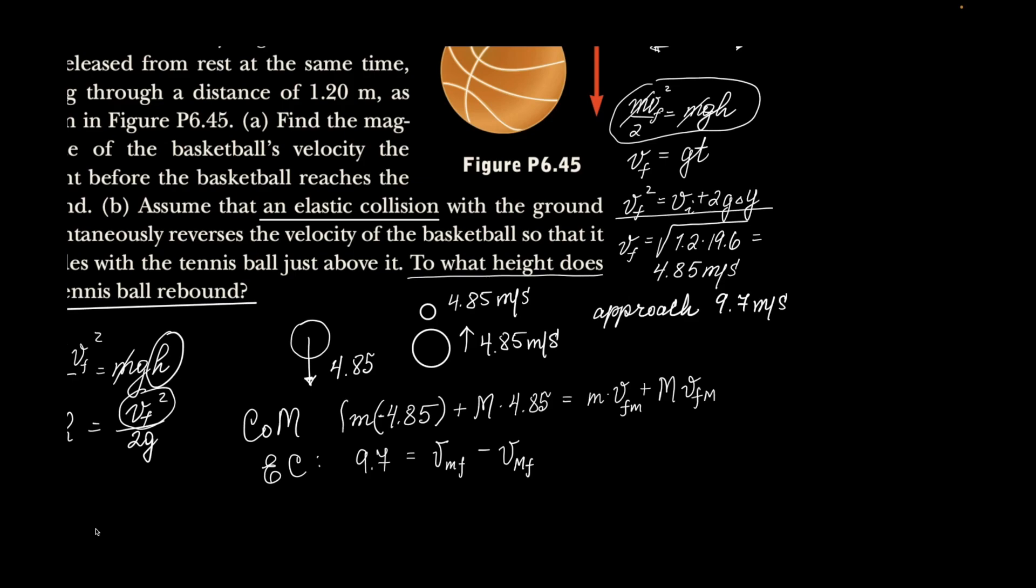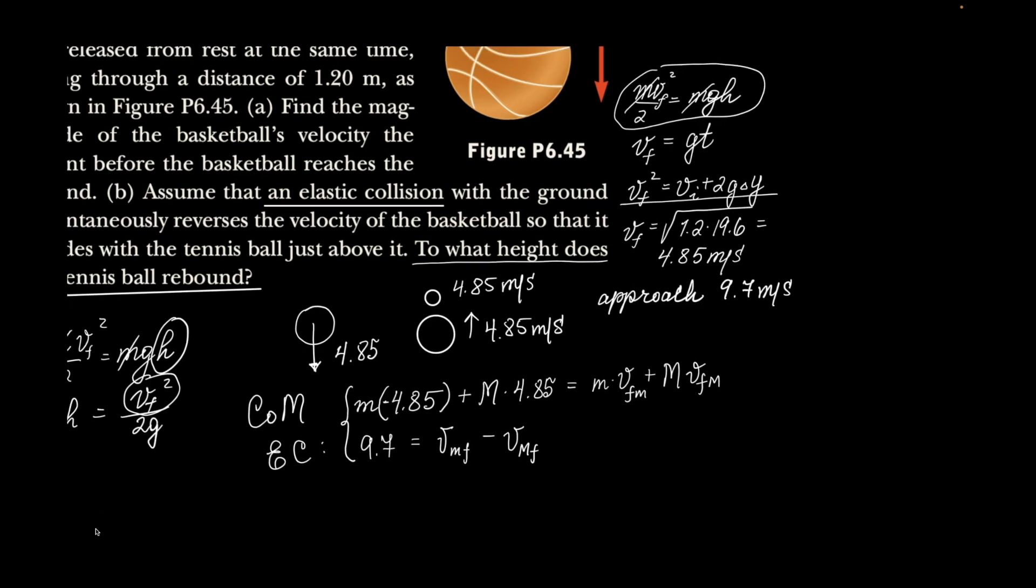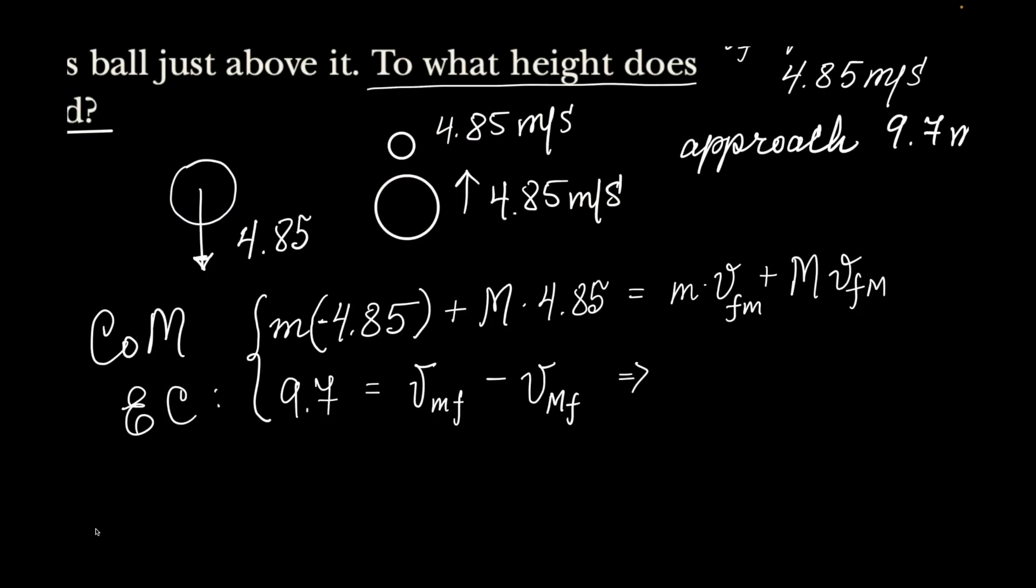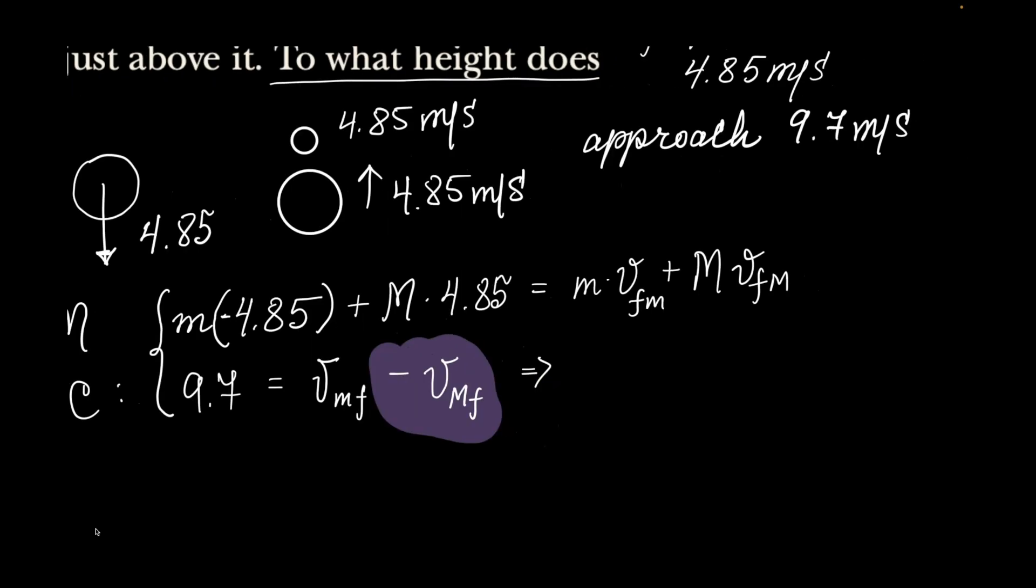Ultimately, after the little m's final velocity, this is what I'm going to be solving for. So I'm going to substitute the velocity of the big mass. If I rearrange this, I'm going to put that to the left and 9.7 to the right. So the velocity of the big ball, the final velocity of the basketball is going to be the velocity of the tennis ball minus 9.7.